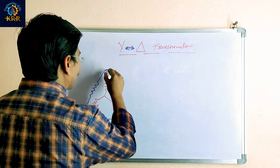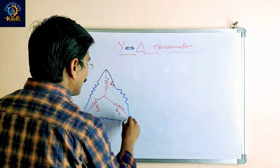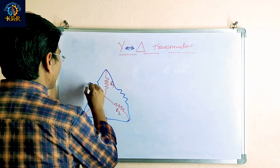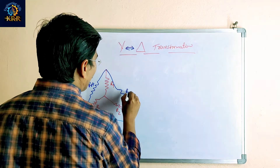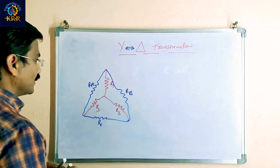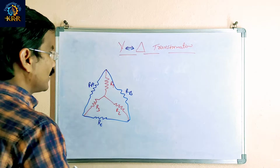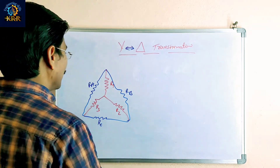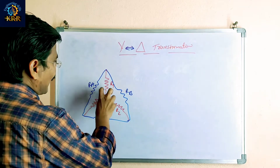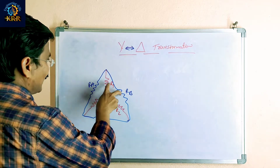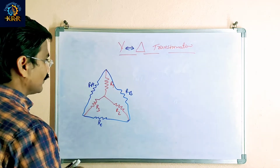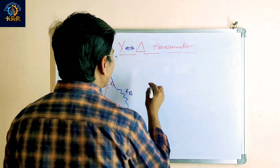This is the delta configuration. This is called Ra, this is called Rb, this is called Rc. Starting with delta as given, how to calculate star.